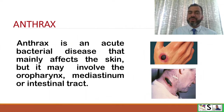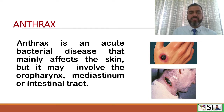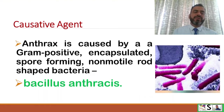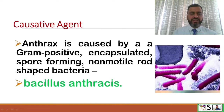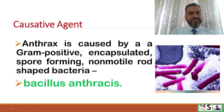What is anthrax? Anthrax is an acute bacterial disease that mainly affects the skin, but it may involve the oropharynx, mediastinum, or intestinal tract. The causative agent — anthrax is caused by a gram-positive, encapsulated, spore-forming, non-motile, rod-shaped bacteria. Here you can see the name is Bacillus anthracis, so we can say that anthrax is caused by Bacillus anthracis.